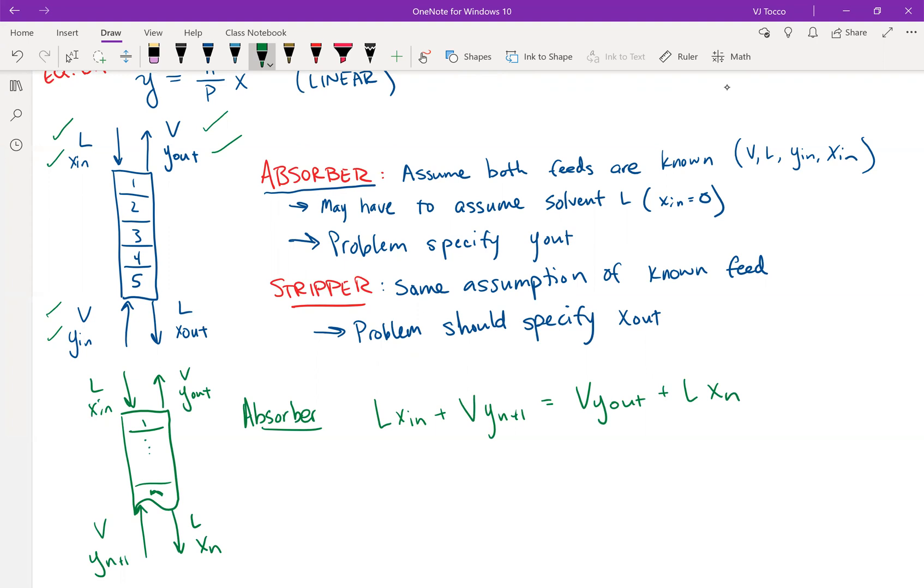Now I'm going to rearrange, get everything on the other side of the equation except for V of y, or y of n plus one. So y_n plus one is equal to L over V times x_n plus, and I like to do this, put these in brackets so that I keep track of things. Y_out, so the V's are going to cancel. So I'm taking the L x_n term over to the other side and then dividing through by V in order to solve for y of n plus one minus L over V times x_n. And this is the form of the operating line for the absorber.